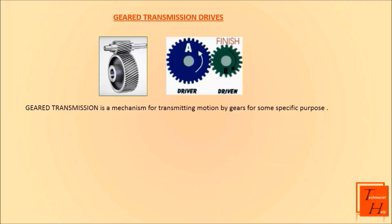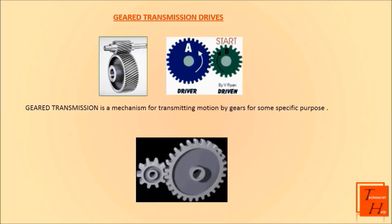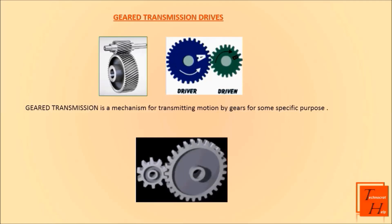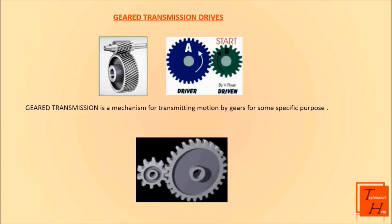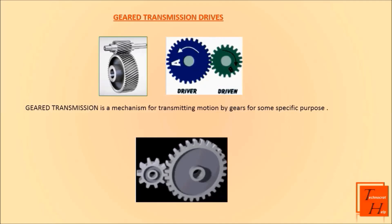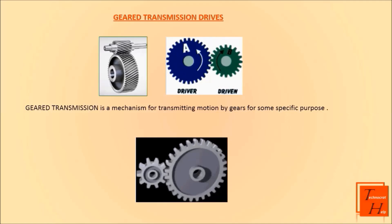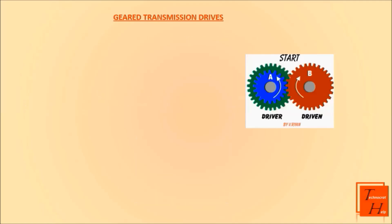Gear transmission is a mechanism for transmitting motion by gears for a specific purpose. These transmissions are positive-type drives used to transmit motion between two shafts, or a shaft and a component having linear motion, by the meshing of two or more gears. They have advantages over other drives like chain and belt drives in cases of precision machines where a definite velocity ratio is important, and also where the driver and follower are in close proximity.